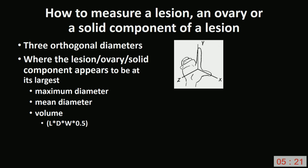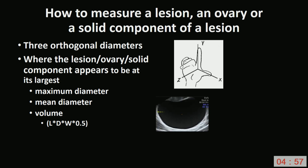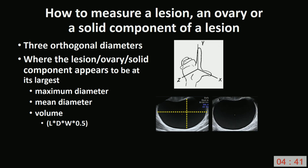How do we take measurements using the standardised IOTA measurement technique? We should always measure three orthogonal diameters — three diameters at right angles to each other — and take these measurements where we estimate the structure is at its largest. To measure an ovarian cyst, first obtain a longitudinal section and measure the length and anteroposterior diameter where the cyst is at its largest, then turn the transducer 90 degrees to obtain a transverse section and measure the width where the cyst is at its largest.